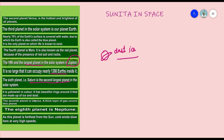The seventh planet is Uranus. A thick layer of gas covers this planet all around it.